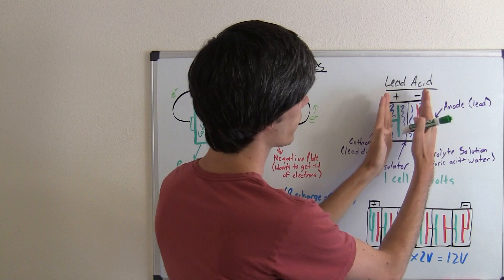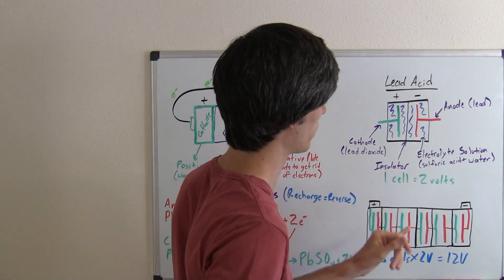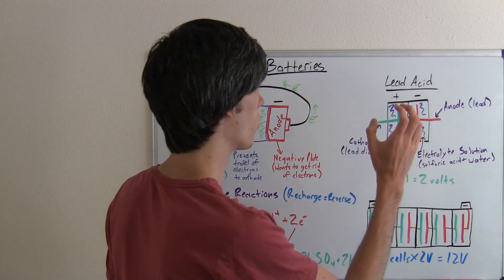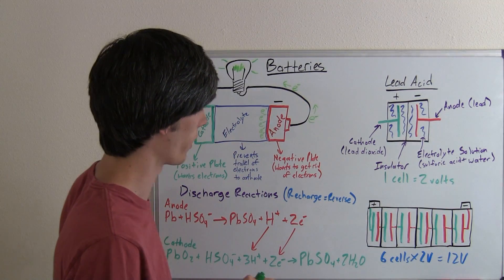And then these two plates are inside of this electrolyte solution, and in between is a separator plate or an insulator. So what reaction occurs inside of there?